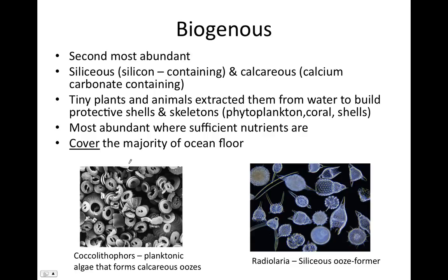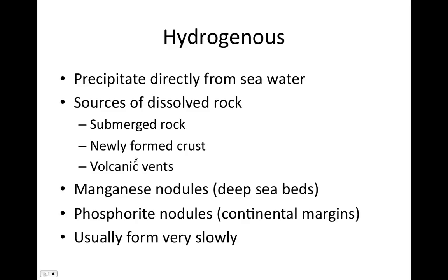Hydrogenous sediments are sediments that precipitate directly out of seawater — dissolved minerals in water that precipitate out and form solids. Those dissolved minerals come from submerged rock being dissolved by water, newly formed crust being more readily dissolved, or volcanic vents dissolving rock. Examples include manganese nodules, which form on deep sea beds, and phosphorite nodules, which form on continental margins. The precipitation of these dissolved minerals is one of the slowest chemical reactions known to occur on Earth.